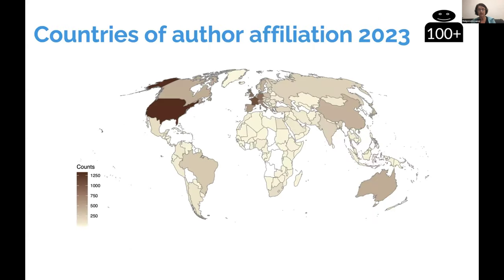If we look at the global distribution of author affiliations where these are known, people from all around the world are contributing to big teams in 2023. But as usual, there is a clear domination of global north countries, especially the US. France, UK, Germany, and other large research-active countries are also prominent.